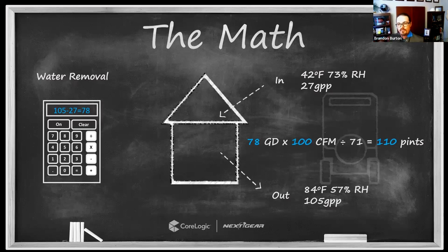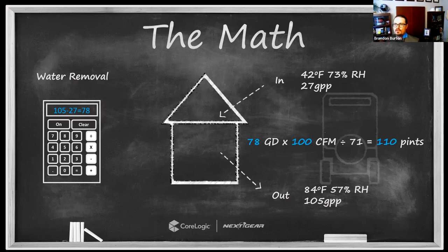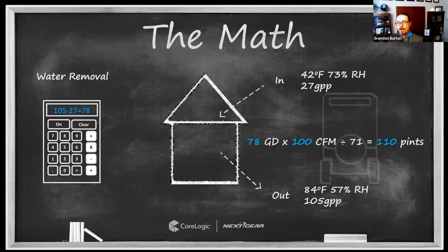This is the real reason why this math — grain depression times CFM divided by 71 — is so important in humidity control. It helps you appreciate, document, analyze, and understand the value of your humidity control resources. It helps you justify and communicate why certain decisions are being made, and establish yourself as the expert on the project. Especially when property owners say, 'It's 42 degrees outside and it's going to rain — why do you have this exhaust fan on?' You can explain the reason using actual water removal numbers.